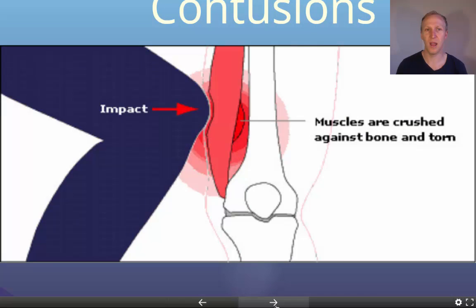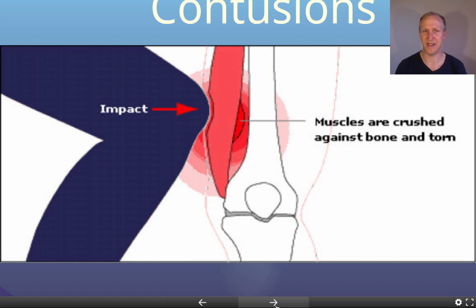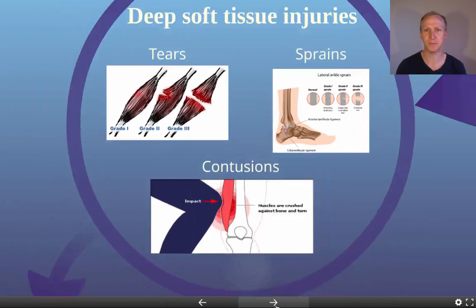Contusions are mostly known as a dead leg or a cork. They are almost always caused by a direct impact — an external force that squashes the muscle, leading to small tears and rupturing of blood vessels at that spot. This causes weakness, pain, and triggers the inflammatory response, causing swelling. The pressure from squashing also causes blood vessels to pop, which is why you get deep bruising from a corked leg.